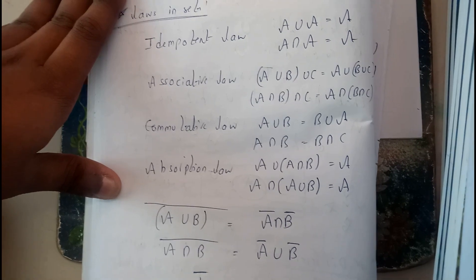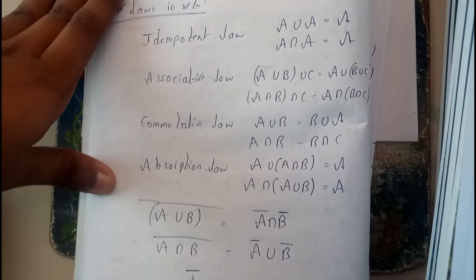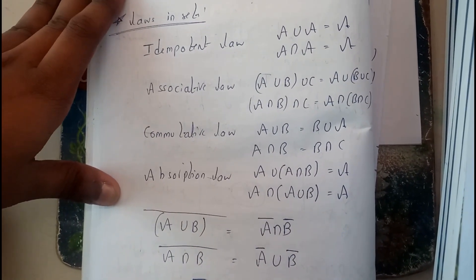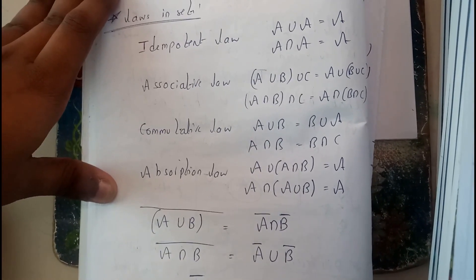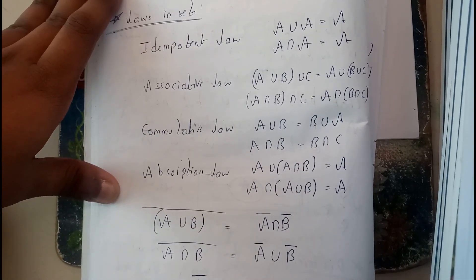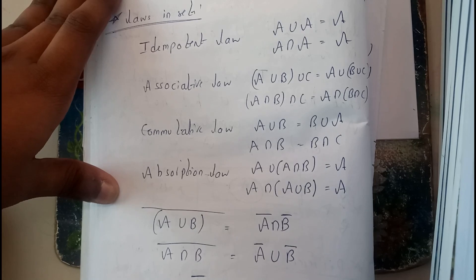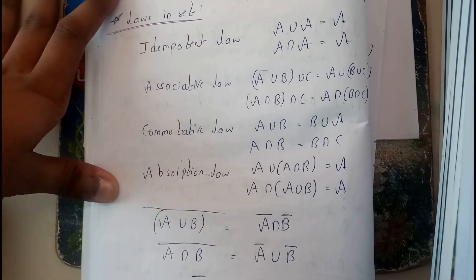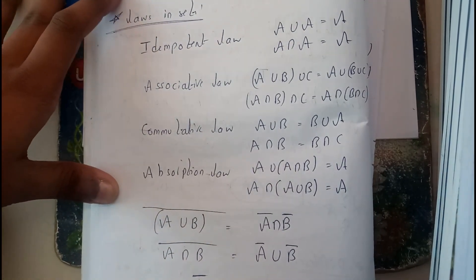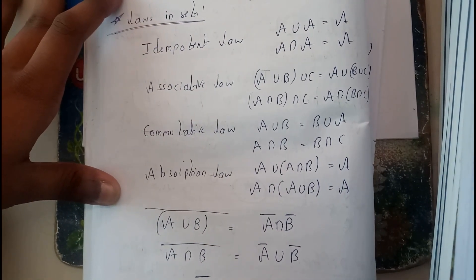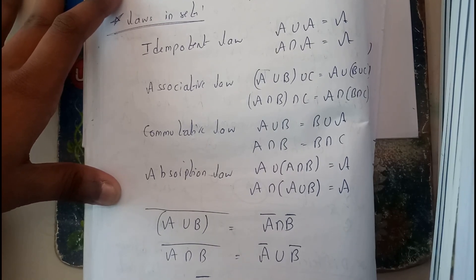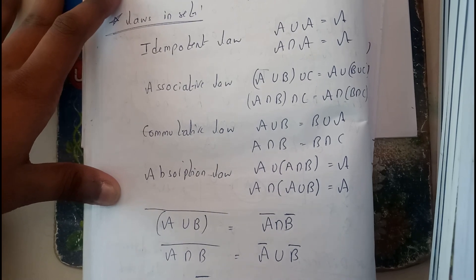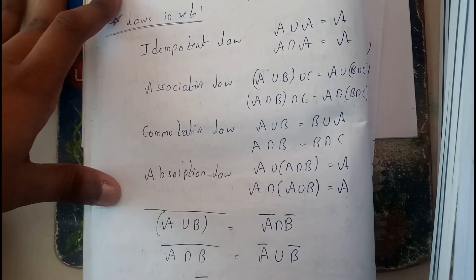Hello guys, in this tutorial let's see some laws in sets. These are really the most important things in set theory. Idempotent law: A union A equals A, A intersection A equals A. Associative law: A union (B union C) equals (A union B)